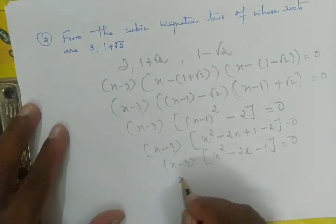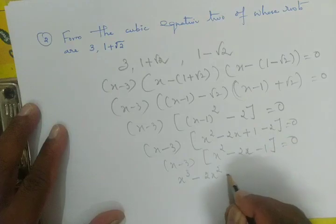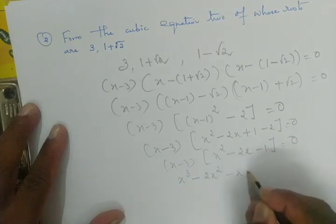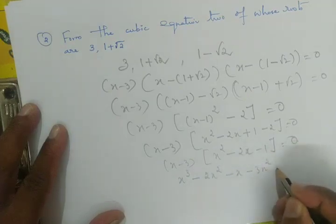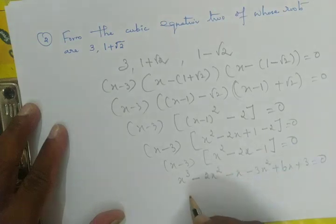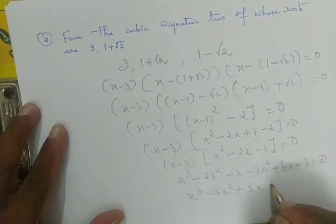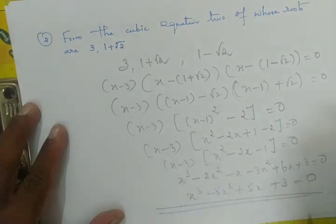Multiplying out x-3 by x²-2x-1: we get x³ - 2x² - x - 3x² + 6x + 3 equal to 0. Simplifying: x³ - 5x² + 5x + 3 equal to 0. This is the required cubic equation.